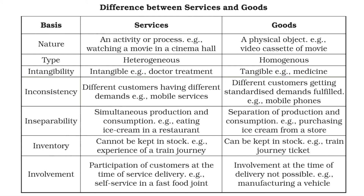Now let's see the difference between services and goods based on the features we have discussed. Services is an activity or process — like watching a movie in a multiplex. In the case of goods, it is a physical component — like purchasing a DVD of a movie. Services are heterogeneous, meaning every time it gives a different experience. Goods are homogeneous — each time you purchase the same product, you get the same product. Services are intangible; goods are tangible. In terms of inconsistency, different customers have different demands — in mobile services they purchase different plans, while in goods, standard products are available to fulfill customer requirements.